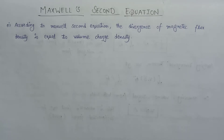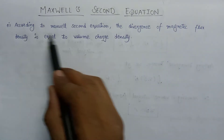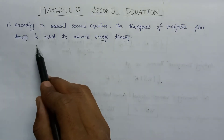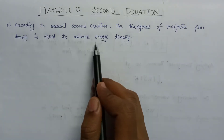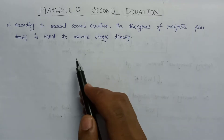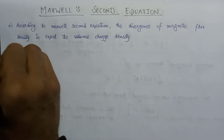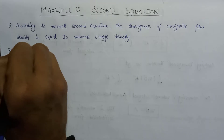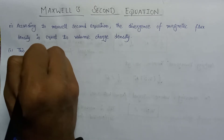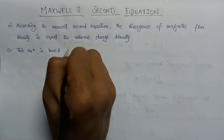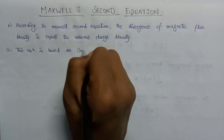Welcome. In this lecture we are going to learn about Maxwell's second equation. According to Maxwell's second equation, the divergence of magnetic flux density is equal to zero. As we know, Maxwell's second equation is based on Gauss's law of magnetostatics.